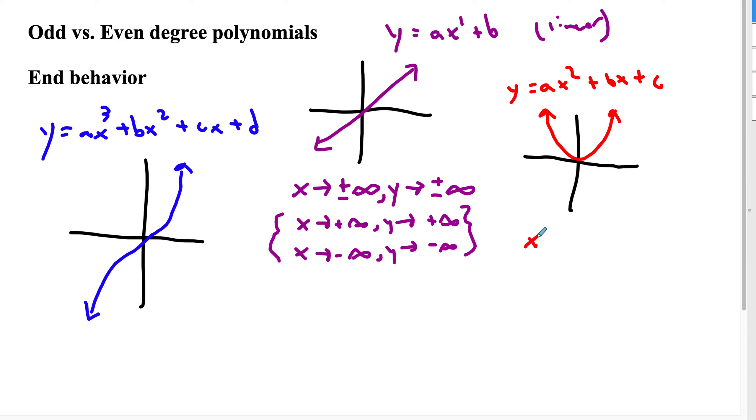Now, quadratics, like we talked about, no matter which way we go, where's y headed? Well, y is always headed in the positive direction, right? So this is an odd degree, one's an odd number, odd degree. And this is even degree.